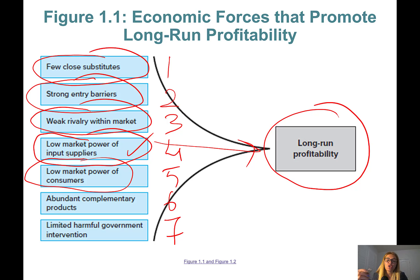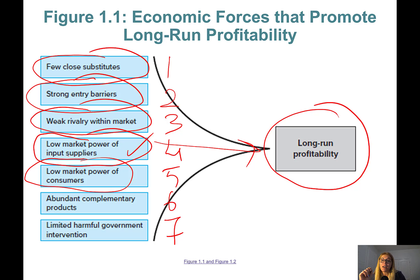The fifth factor is low market power of consumers. Do consumers have market power? For instance, if I go to the grocery store and milk is $4 per gallon, I have no power — I can't negotiate the price. However, if there are 1,000 grocery stores in my city with lots of competitors, then consumers have more market power because they have lots of options.